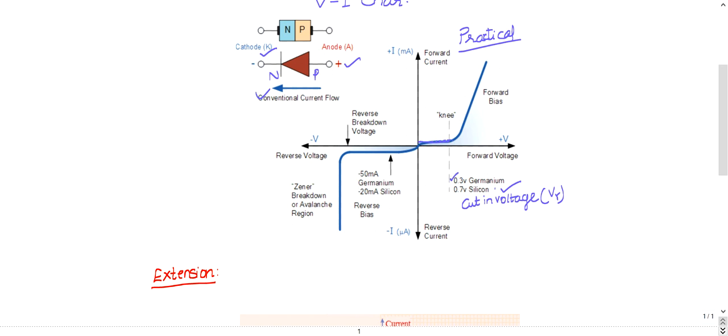These are the forward bias characteristics of PN junction diode, the ones in the first quadrant. The ones in the third quadrant represent the reverse bias characteristics. You can see during reverse bias, the current remains almost constant.